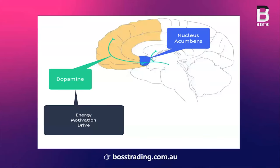The scientific name for the pleasure centre is nucleus accumbens. When stimulated, it releases the feel-good chemical dopamine, responsible for your energy, your motivation, and your drive — all that good stuff you want in your trading. But it's in the timing of its release that's going to help you understand a whole lot about what you do when trading, and what most other people are doing when trading.